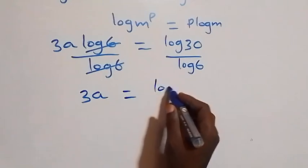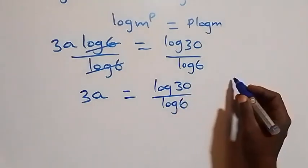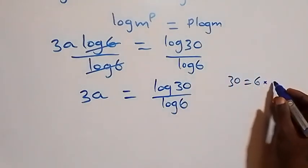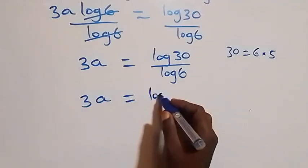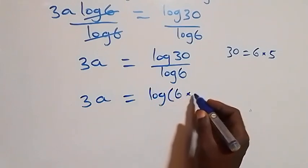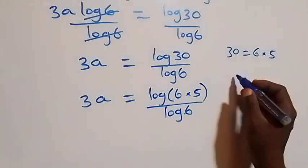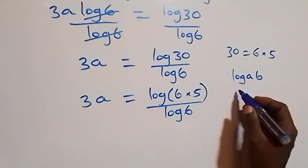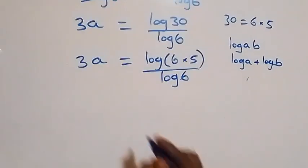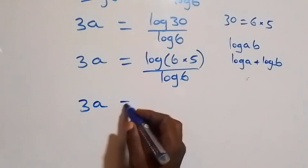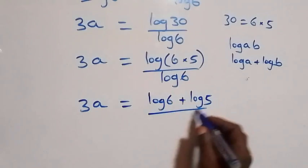We can write 30 as 6 × 5, so the equation becomes 3a = log(6 × 5) / log(6). Applying the logarithm product law — log(a × b) = log(a) + log(b) — this becomes 3a = (log(6) + log(5)) / log(6).